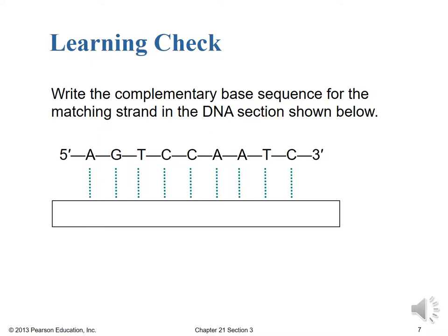Before we end this lecture, let's have a learning check to make sure we're getting the concept across. You're asked to write the complementary base sequence for the matching strand in the DNA section shown below. At the five-prime free phosphate end we have: A, G, T, C, C, A, A, T, C — and then the free OH at the three-prime hydroxy group on the ring carbon. Go ahead and give the complement. Stop the video here if you need a little time to do that, and start it back up when you're ready to check your work. Good luck.